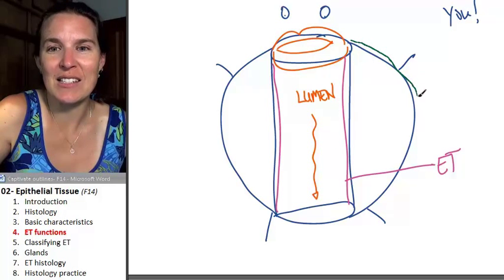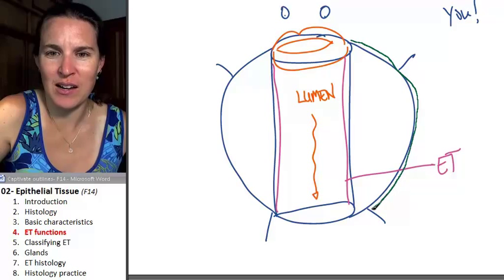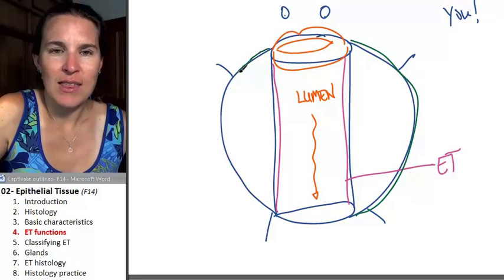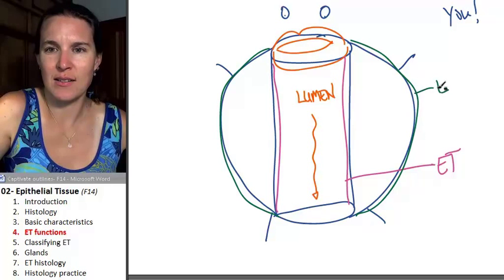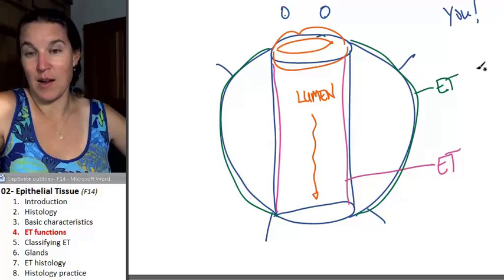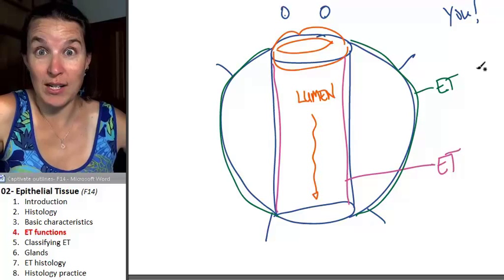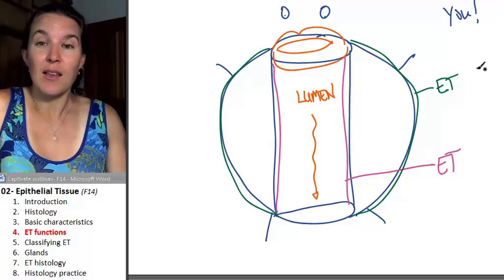Where else are you going to see epithelial tissue in my little fantastic drawing? Yes. That's the worst color I've ever picked. This is also lining a space. What is that? That's your skin.